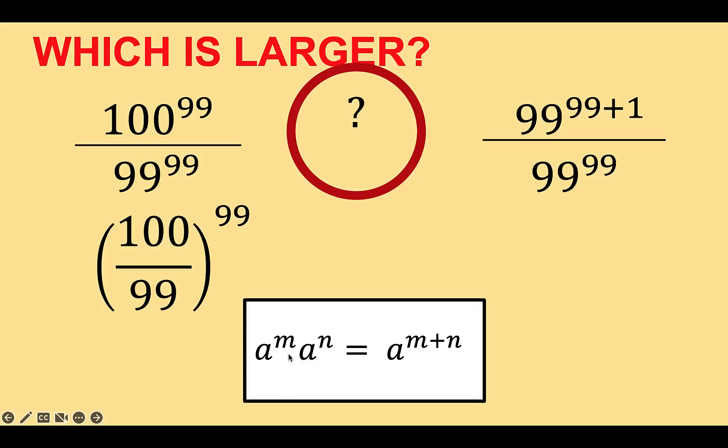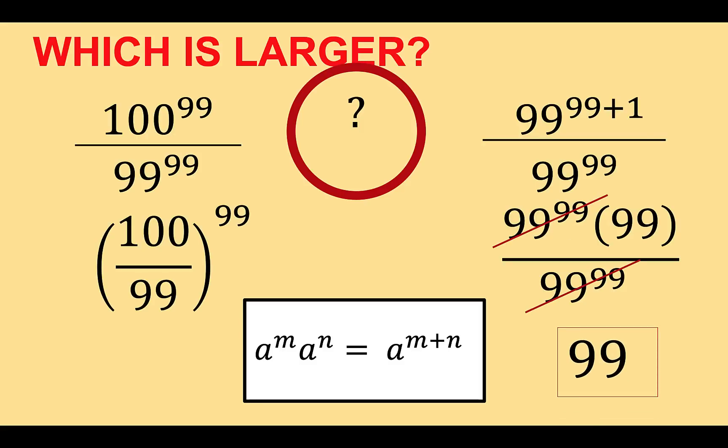And then applying now this property, we can turn this into multiplication, the base raised to the first exponent times the same base raised to the second exponent, which happens to be 1. That's why we do not need to write 99 raised to 1 here anymore. And there is now a common factor, 99 raised to 99. And simplifying, we have 99 at the right side.